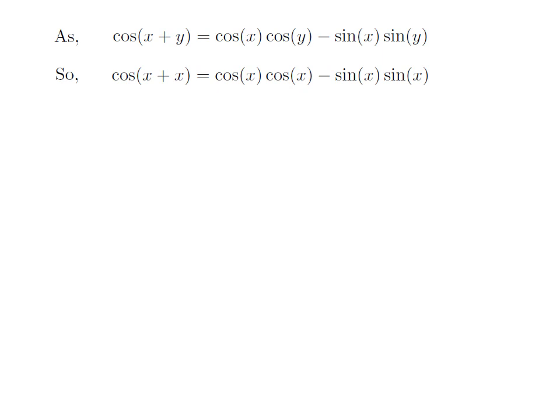I have replaced y by x in the above identity. So I got cosine of x plus x, that is cosine of 2x, is equal to cosine of x into cosine of x minus sine of x into sine of x. So cosine of 2x is equal to square of cosine of x minus square of sine of x. This is the first identity for cosine of 2x.